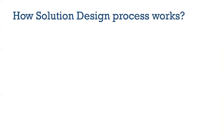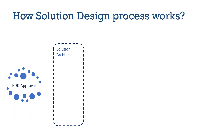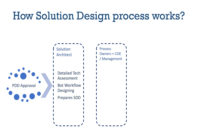Now let's look at how the Solution Design process actually works. Prior to getting started with actual solution designing, we have a PDD approval — the functional documentation of the process steps. Once PDD is approved, the solution architect gets involved in detail and does a detailed tech assessment on the process. He or she designs the workflow of the bot — how it will look, how it will work — and then prepares the SDD. Then the process owner and COE management review and approve the SDD, along with ensuring basic readiness for development.